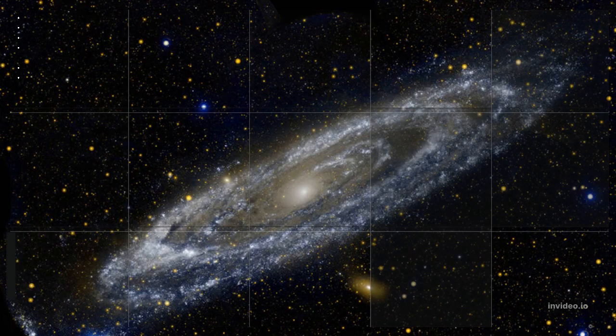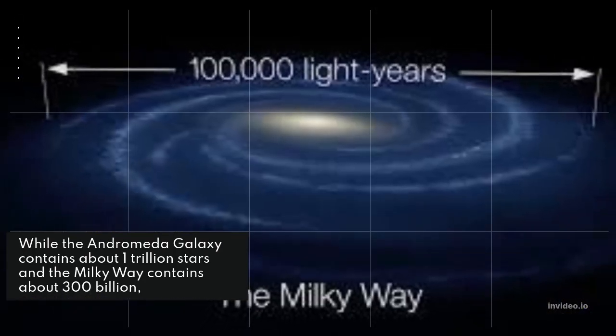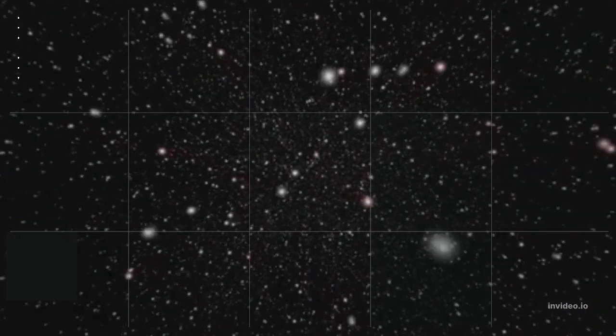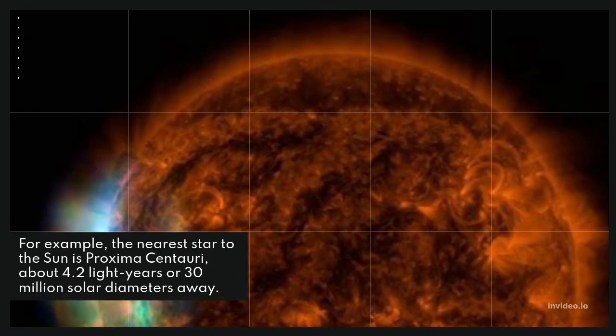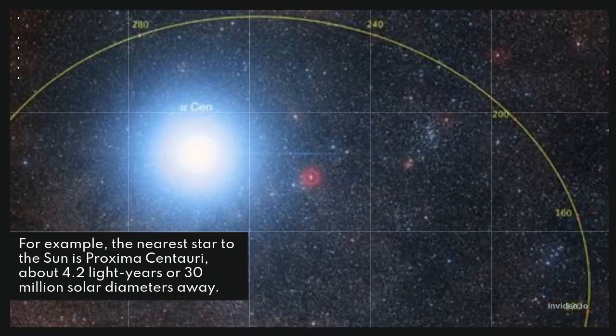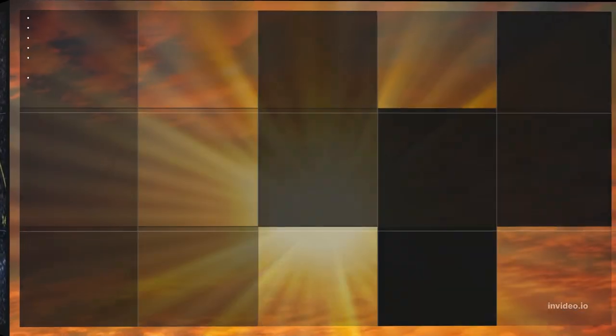While the Andromeda Galaxy contains about 1 trillion stars and the Milky Way contains about 300 billion, the chance of even two stars colliding is negligible because of the huge distances between the stars. For example, the nearest star to the Sun is Proxima Centauri, about 4.2 light years or 30 million solar diameters away.